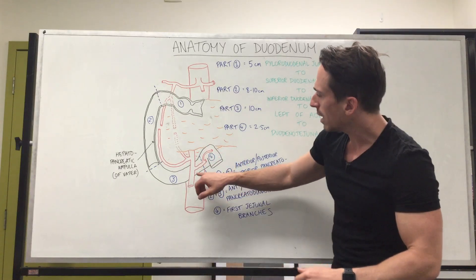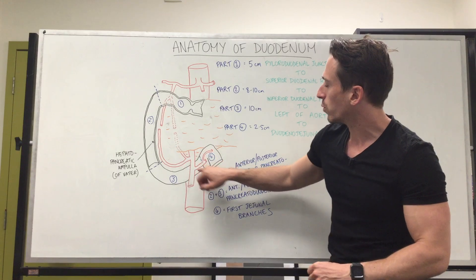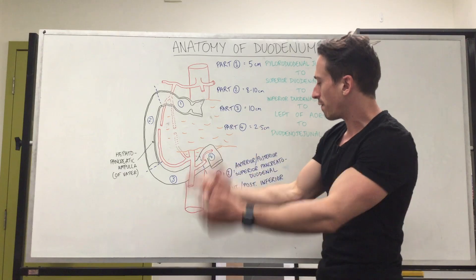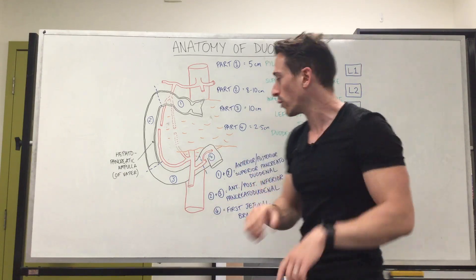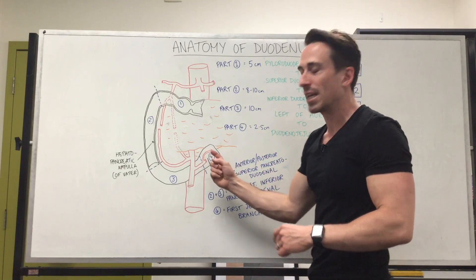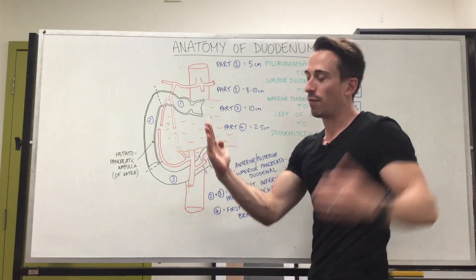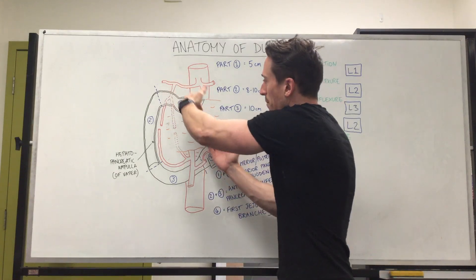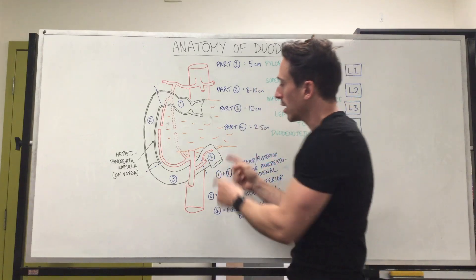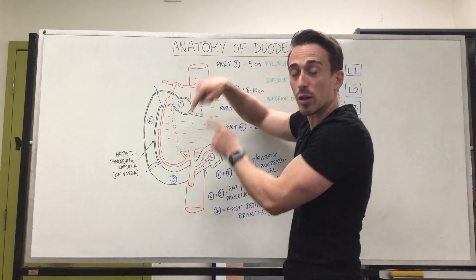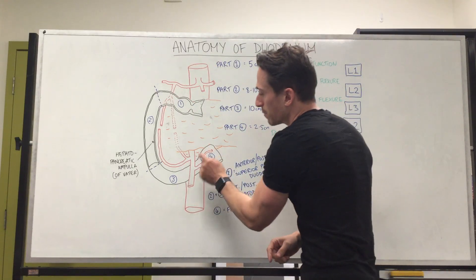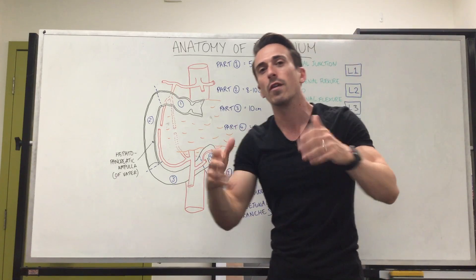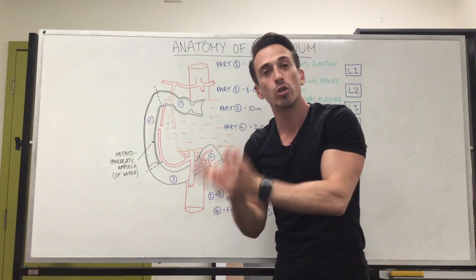For the fourth part of the duodenum, coming off the superior mesenteric branch of the aorta, there is the first jejunal artery, which has branches — including a duodenal branch — that feeds the fourth segment. In fact, the first jejunal artery can anastomose with the superior mesenteric artery, meaning the fourth part of the duodenum can actually get two blood supplies: one from the superior mesenteric artery and one from the celiac trunk. This means it very rarely becomes ischemic.